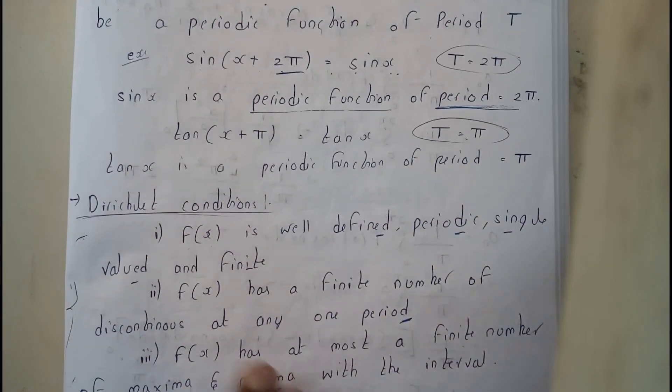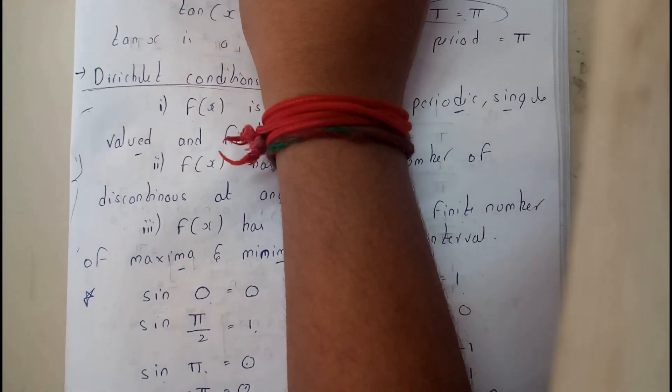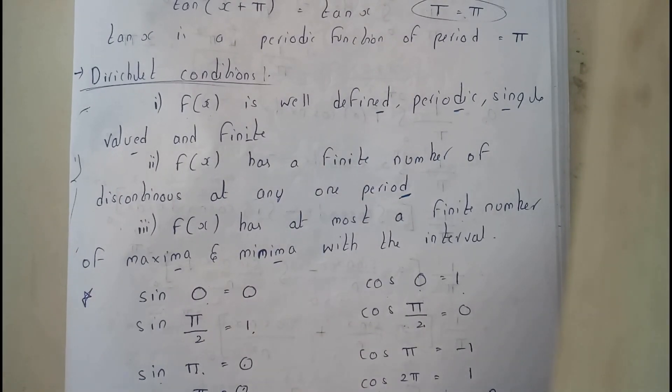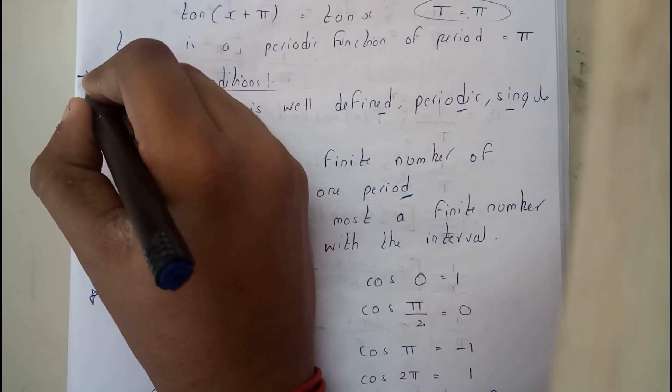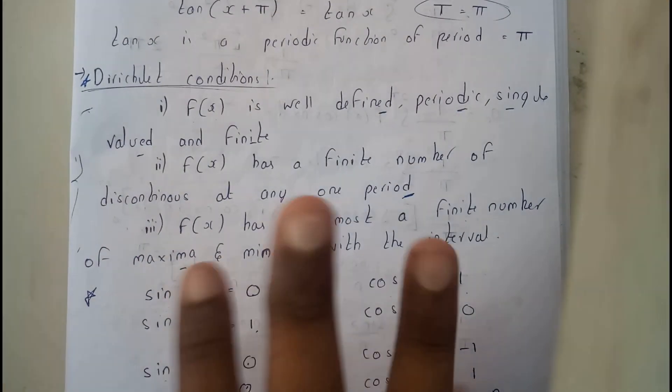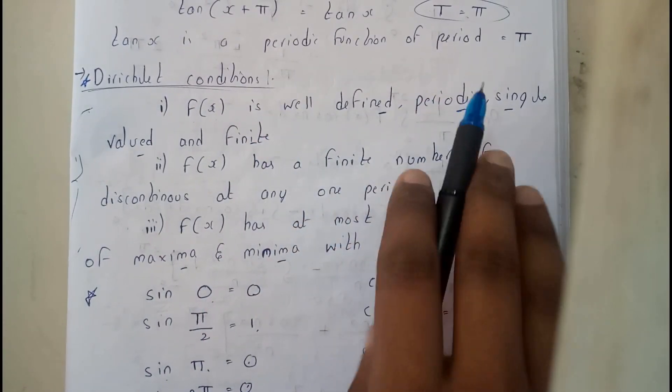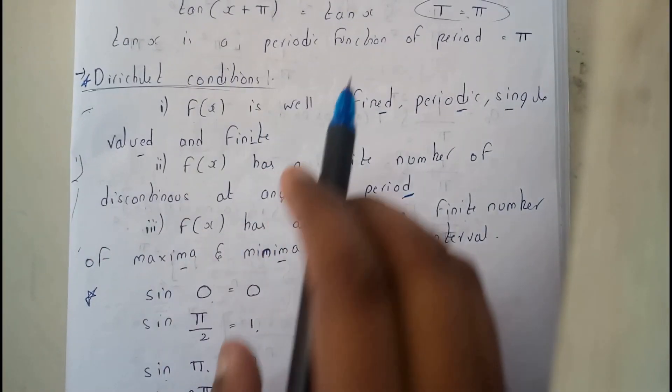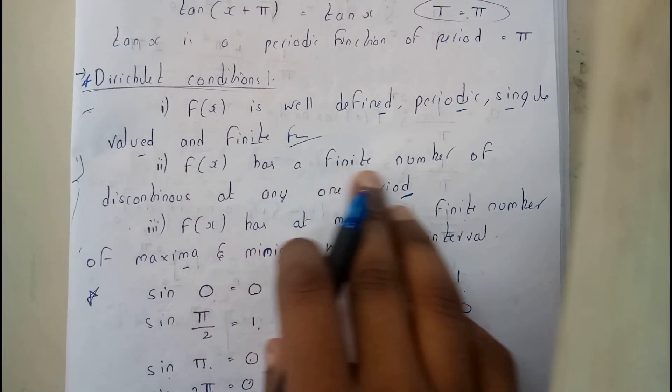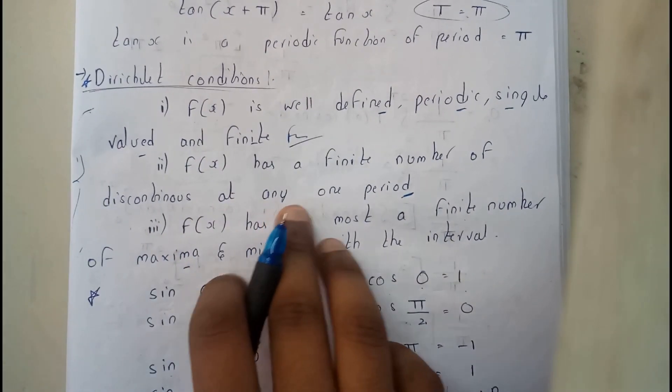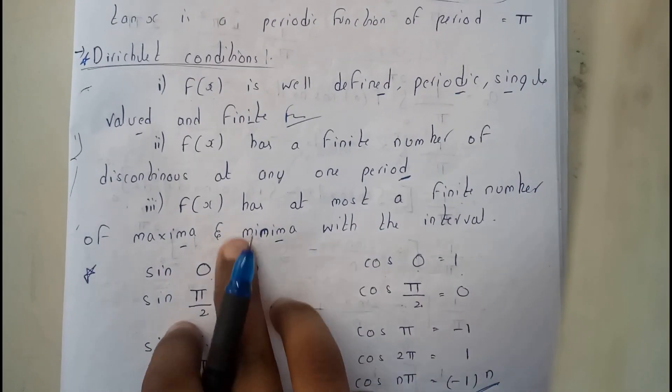Now let us go through Dirichlet conditions. This is really important. You will be finding this in previous year papers. There are three conditions. First: f(x) is well defined, periodic, single valued, finite function. Second: f(x) has a finite number of discontinuities at any one period.